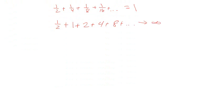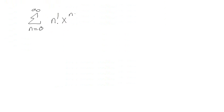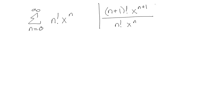If we're given a generalized power series — say the sum as n equals 0 to infinity of n factorial over x to the n — we can ask: what is the (n+1) term? And is the ratio of the (n+1) term over the n term less than 1? If it is less than 1, the series converges. If it's equal to or greater than 1, it never converges.